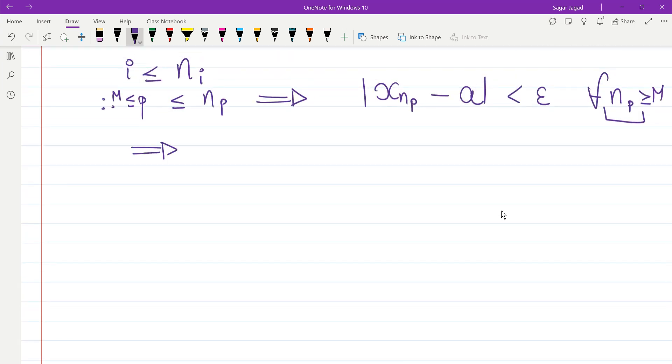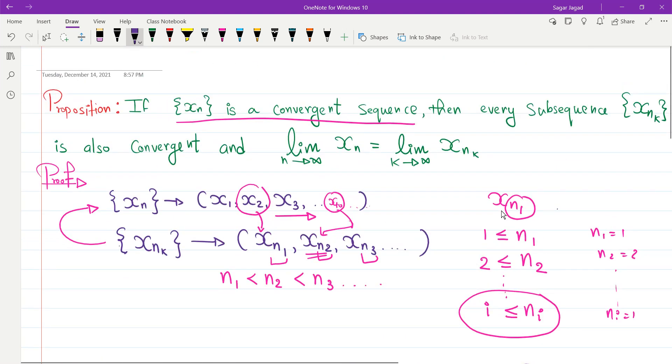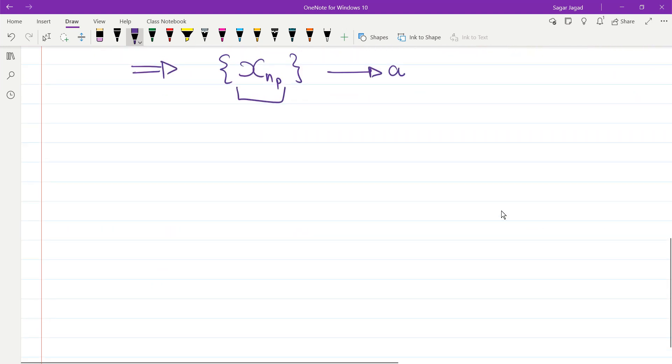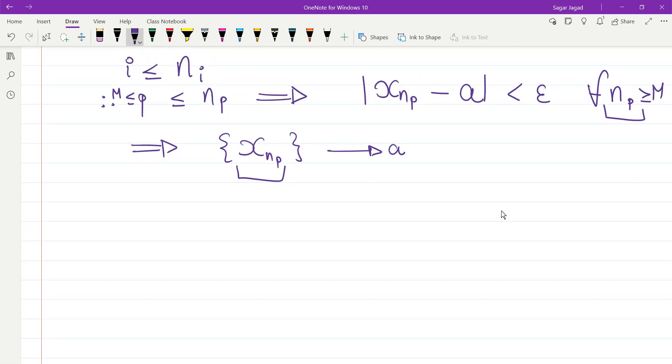What does this mean? This means my xnp, by the definition only, this means my sequence xnp converges to a. We are done. We have found a subsequence and that subsequence converges to a. Whatever we want, we just got it. I am just using a change in the notation; over here I have k, I am just using p. There is nothing wrong in just changing the name from k to p.